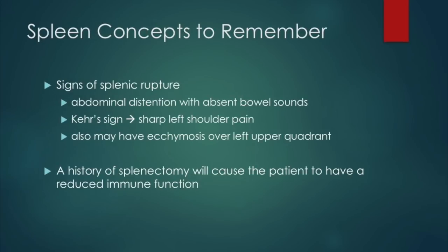There are not many spleen questions on the CCRN. Key concepts: signs of splenic rupture include Kerr's sign (referred left shoulder pain) and ecchymosis over the left upper quadrant. You can also have abdominal distension with absent bowel sounds. A patient with a history of splenectomy will typically have reduced immune function.